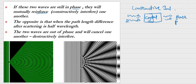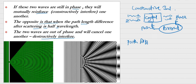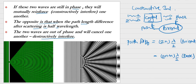On the opposite side, when the path length difference after scattering is half wavelength (lambda/2), the two waves are out of phase and cancel one another — this is destructive interference. If the path difference is an even multiple of lambda/2, we get a bright point (constructive interference). If it is an odd multiple of lambda/2, we get a dark point (destructive interference).